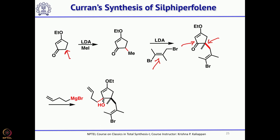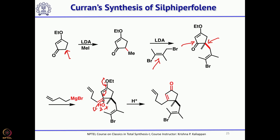Upon protonation, a positive charge is generated, and the lone pair on the ethoxy group pushes the water molecule out, yielding the corresponding cyclopentene. This cyclopentene is the key precursor for the radical cyclization.